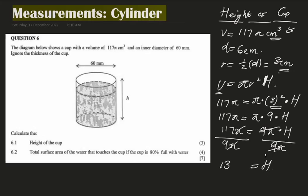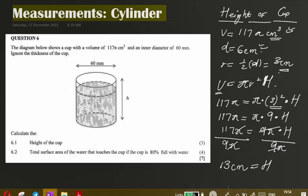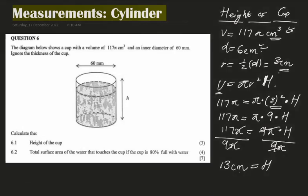Remember, we converted everything to centimeters, so the height is in centimeters. The answer to 6.1 is: the height equals 13 centimeters. Never forget to number your questions.